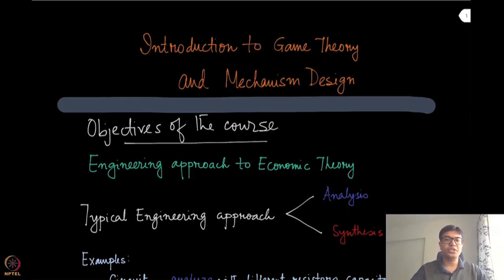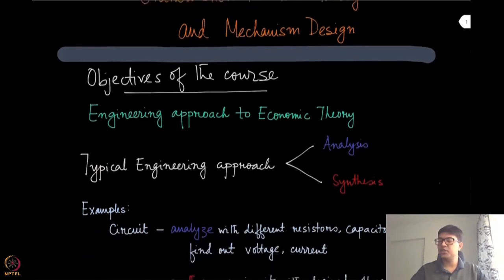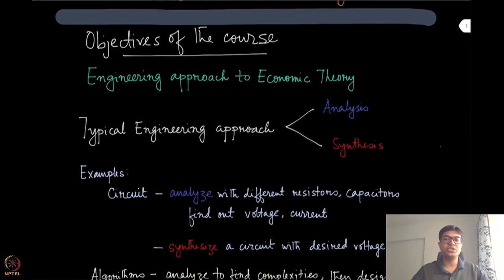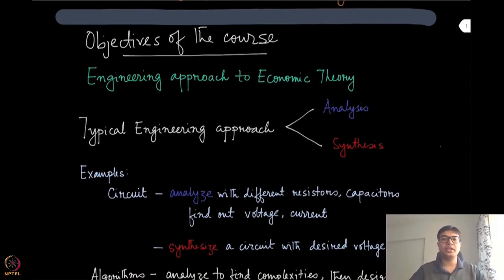So what do we typically do in usual engineering courses? Typical engineering courses always have two components: one is the analysis component and the other is the synthesis component. Let's look at certain examples.